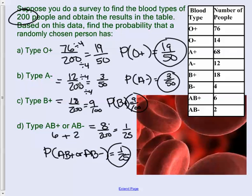Making sure that we have the probability and we put O positive 19 over 50. The rest of them would be the following. Let's take a look. If you look at my work, the probability of A negative was 12 out of 200, but that simplified to 3 out of 50. The probability of B positive was 18 out of 200, and that simplifies to 9 out of 100. And if you look here at AB positive or AB negative, it's 8 out of 200 because we add them together, and that would be 1 out of 25.